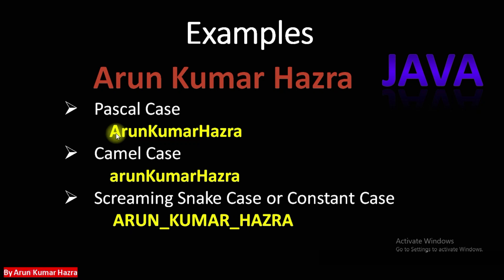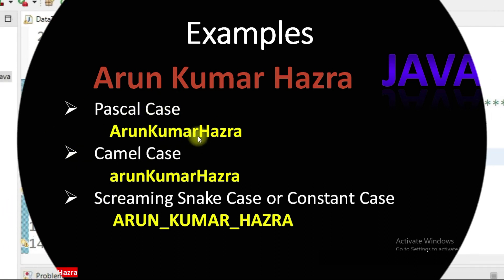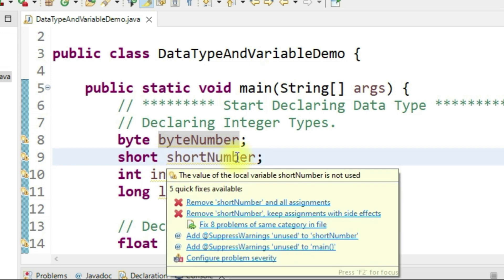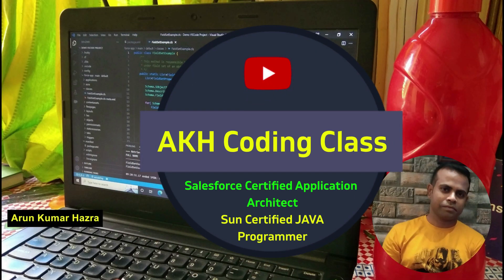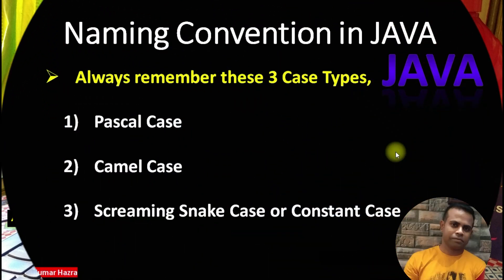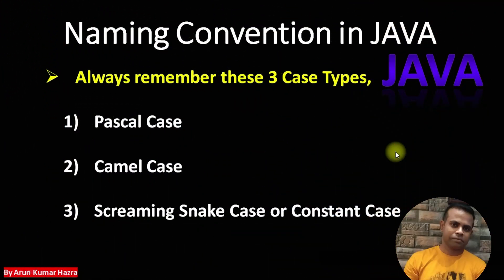Let's do some practice on data type, variable, and their naming convention. Before creating any variable in Java, you must understand these three types of case: Pascal case, camel case, and screaming snake case or constant case. Let's take an example to understand each one.